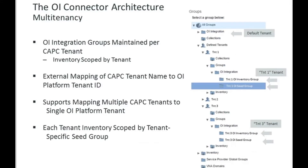With multi-tenancy, there is a separate set of groups per CAPC tenant, and inventory can be scoped by tenant. There is a separate mapping that lets you map a CAPC tenant to a DOI platform tenant ID, and you can map multiple CAPC tenants to a single DOI platform tenant ID. In the CAPC group hierarchy, each defined tenant would have its own OI Integration parent group with seed and inventory subgroups underneath.